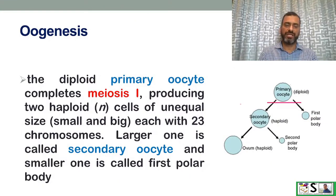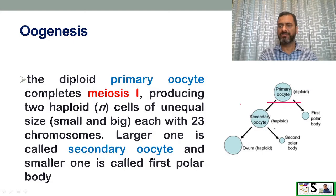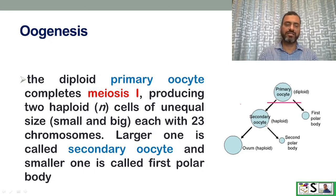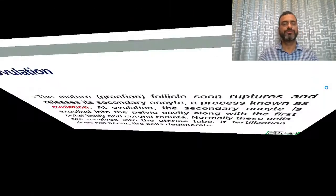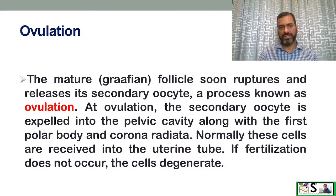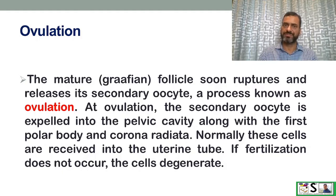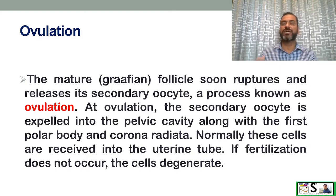The diploid primary oocyte completes meiosis I, producing two haploid cells of unequal size, each with 23 chromosomes. The larger cell is the secondary oocyte and the smaller one is the first polar body. The mature Graafian follicle soon ruptures and releases the secondary oocyte — this is ovulation. At ovulation, the secondary oocyte is expelled into the pelvic cavity along with the first polar body and corona radiata, where they are normally received by the uterine tubes. If fertilization does not occur, these cells degenerate.